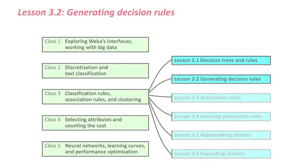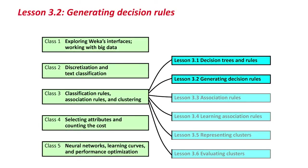Hello again, and welcome to Lesson 3.2 of More Data Mining with Weka. In the last lesson, we looked at decision rules versus decision trees — they're kind of similar representations, but interestingly different in how they express things. We also looked at a bottom-up covering algorithm for generating rules called PRISM. If you did the activity associated with that lesson, you'll realize that PRISM is not really a terribly good machine learning method — it's not really meant for serious use.